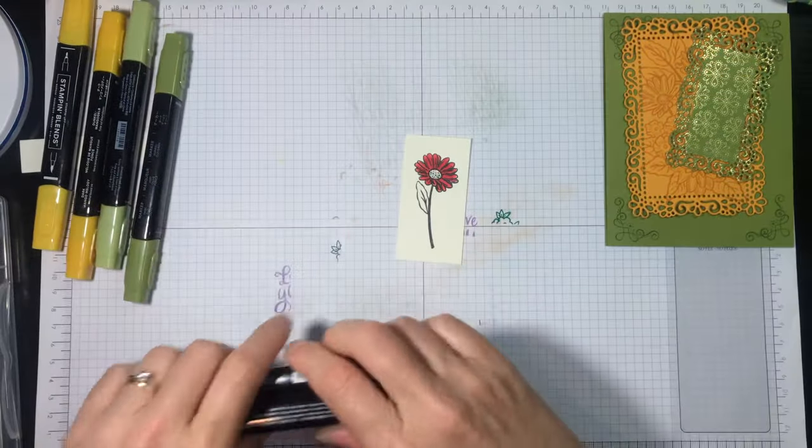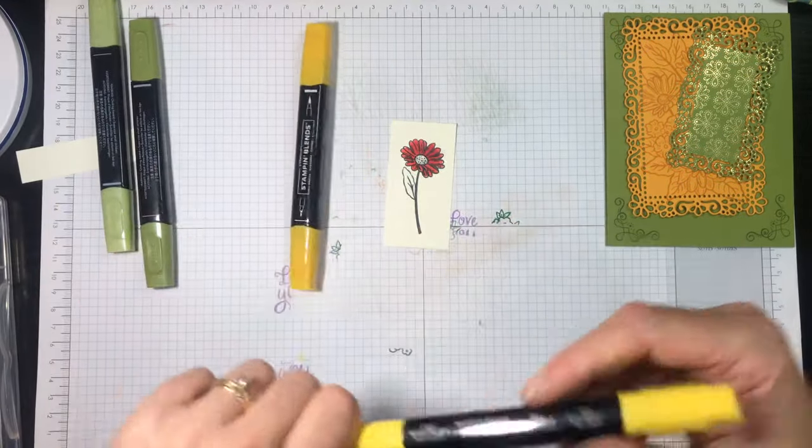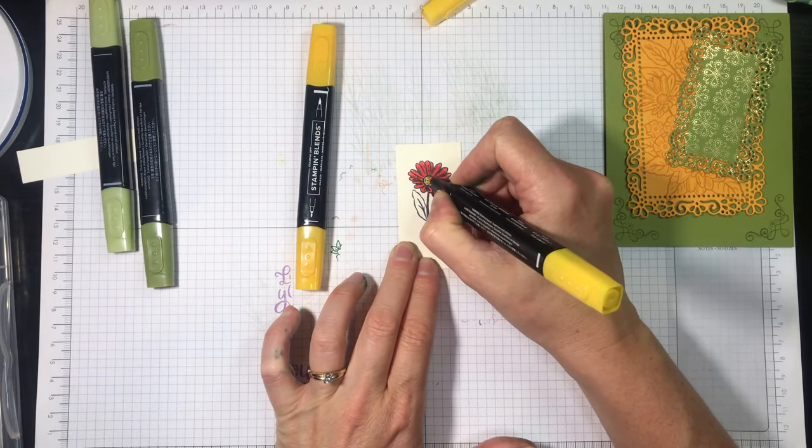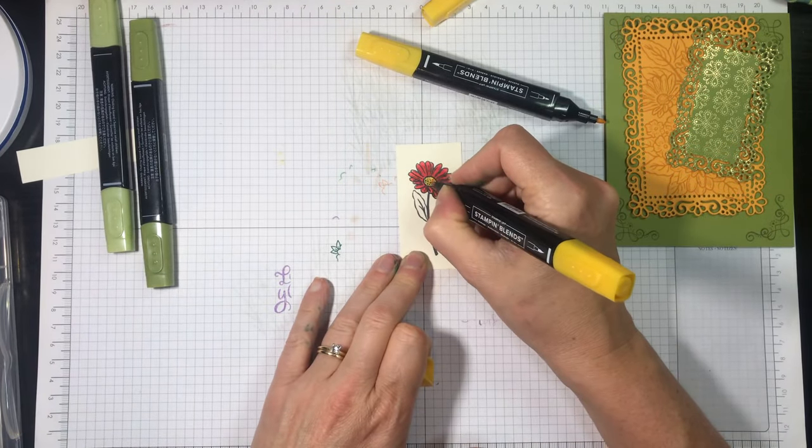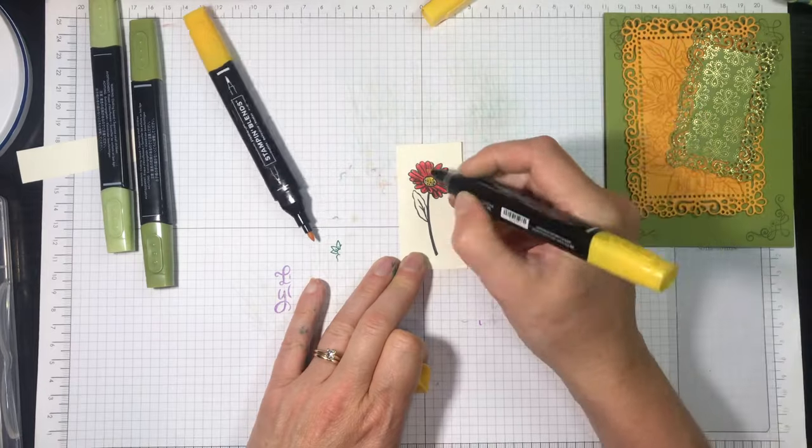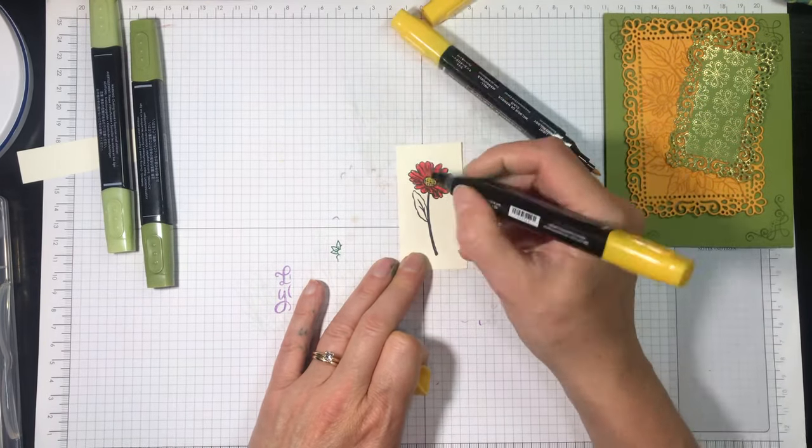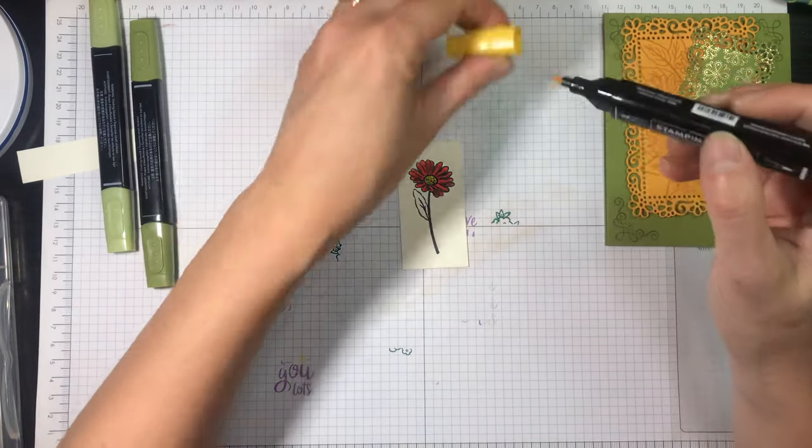Okay, so I finished coloring that. Cap those back on tight and now I'm going to bring in my light and dark mango melody. And again, I'm going to start with my light and I'm going to color the center of this flower. And then I'll come in with my dark. And then I'll go back in with my light. And then I'll take my dark and just dab it a little bit more. Done with the flower center.